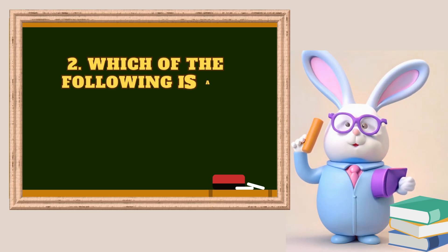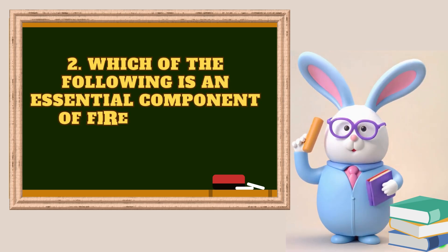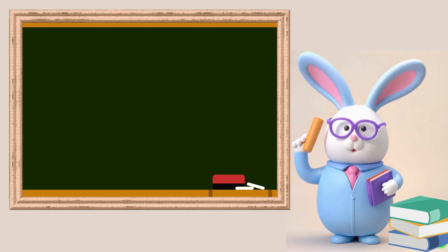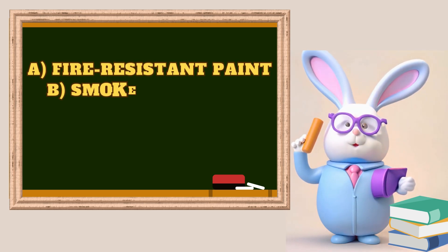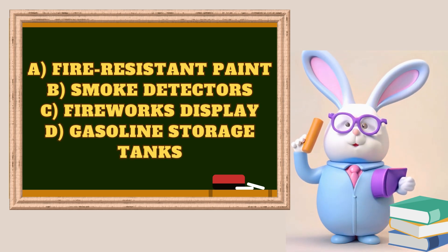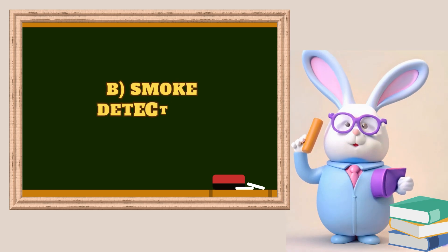Question 2: Which of the following is an essential component of fire safety in buildings? A. Fire-resistant paint. B. Smoke detectors. C. Fireworks display. D. Gasoline storage tanks. The answer is smoke detectors.